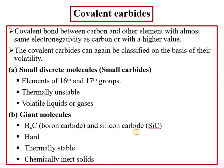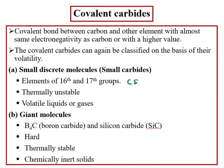Covalent carbides are divided into two classes: giant molecules and discrete molecules. Giant molecule carbides are hard, thermally stable, and chemically inert solids. Discrete molecule carbides, which are small carbides, are generally liquids or gases — examples include CS₂, CCl₄, and CH₄, though these can also be classified as sulfides, chlorides, and hydrides. These discrete molecule carbides are volatile liquids or gases.